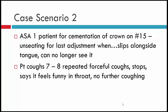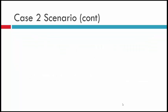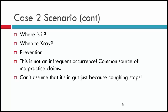Case two: an ASA-1 patient for cementation of a crown on tooth number 15. While unseating it for a final adjustment, it slips alongside the tongue — you lose it and can no longer see it. The patient coughs forcefully seven or eight times, then stops coughing, and says it feels funny in his throat with no further coughing. We can't assume it's in the gut just because coughing stopped — it may still have been aspirated. This scenario is a common source of malpractice claims.